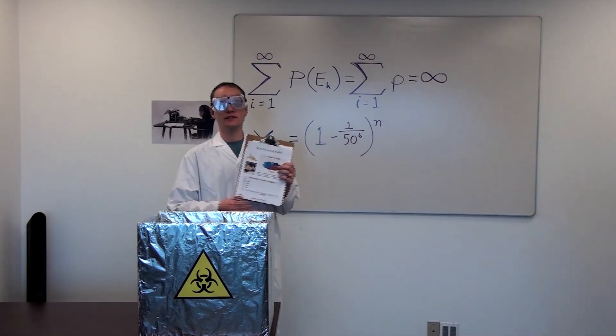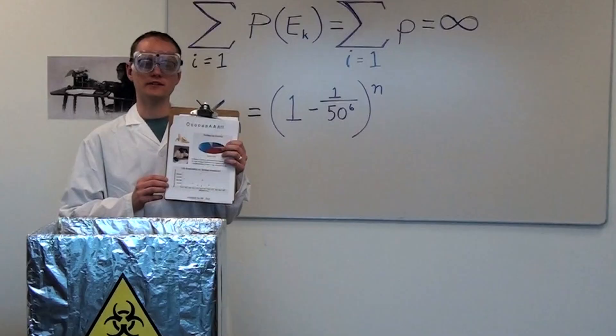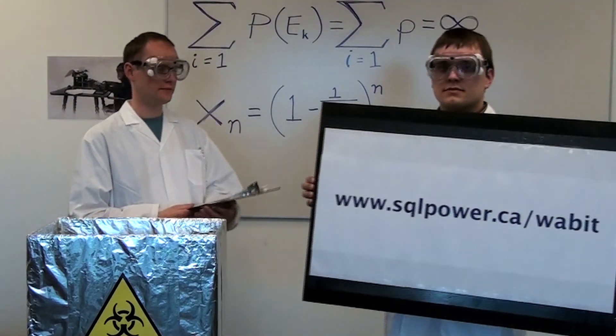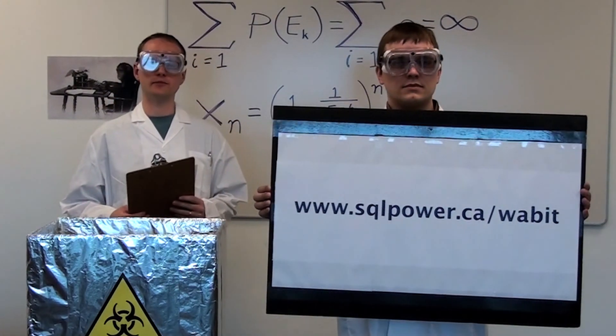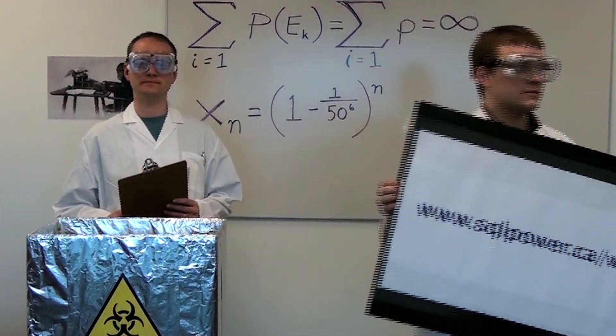Well, there you have it, folks. Apparently it takes just four monkeys to produce a business intelligence report using SQL Power Wabbit all-in-one BI reporting tool. And remember, you can download Wabbit today from SQLPower.ca slash Wabbit.